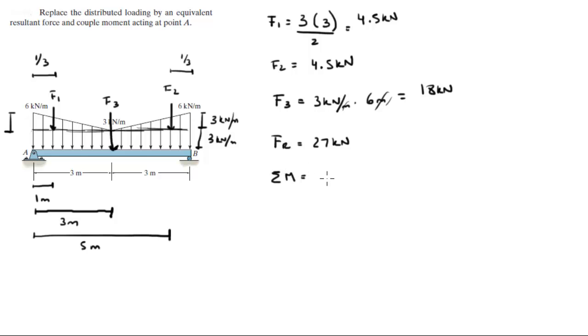And the moment is equal to F1, let's assume clockwise is positive. F1 is turning the sliver arm of 1 meter plus F2 is turning the sliver arm of 3 meters, I'm sorry, F3 is turning the sliver arm of 3 meters clockwise as well, so it's positive, and F2 is turning the sliver arm of 5 meters clockwise.